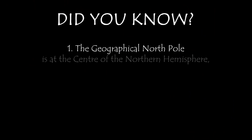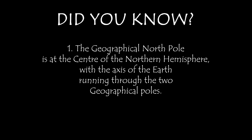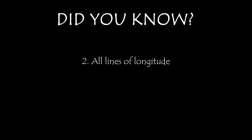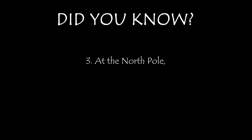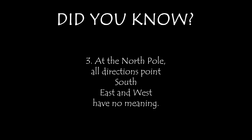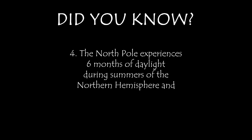The geographical north pole is at the center of the northern hemisphere, with the axis of the earth running through the two geographical poles. All lines of longitude converge at the geographical north pole. At the north pole, all directions point south — east and west have no meaning.